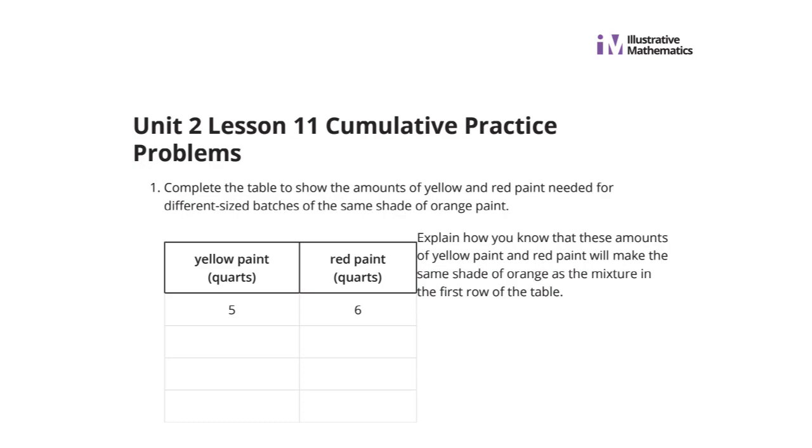Question 1. Complete the table to show the amounts of yellow and red paint needed for different sized batches of the same shade of orange paint. Explain how you know that these amounts of yellow paint and red paint will make the same shade of orange as the mixture in the first row of the table.